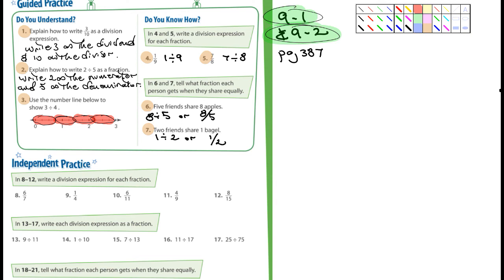4 with 5, it says, write a division expression for each fraction. You should recognize, you know, 1 over 9 is the same thing as 1 divided by 9. For number 5, 7 over 8 is the same thing as 7 divided by 8. And you guys already know this. Number 6, 5 friends share 8 apples. So 8 divided by 5. Number 7 here, 2 friends share 1 bagel. 1 divided by 2. Or, you know, 1 over 2. I mean, there's a couple different ways you can do these.